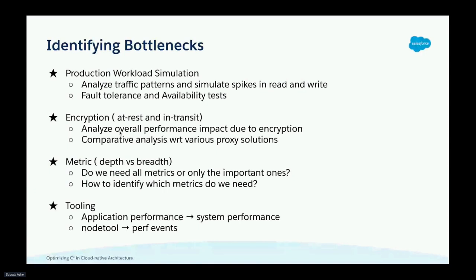The next topic that we will be covering is metrics, which is one of the important identifiers for bottlenecks. We need to find what is the right metric to monitor and alert on. We do not want to overwhelm the system with too many metrics, nor create gaps in monitoring that can lead to higher mean time to respond and to resolve. We will also have a look into the strategy around tooling and frameworks, which are needed to monitor and profile Cassandra — starting with Node tool at a high level to deep dive perf events, flame charts, and kernel level performance. These complement each other and help in faster root cause analysis.